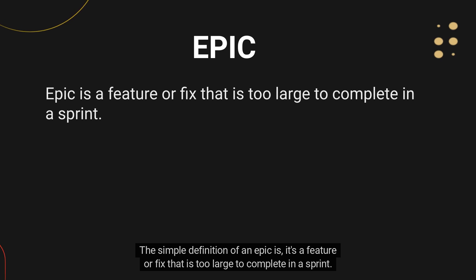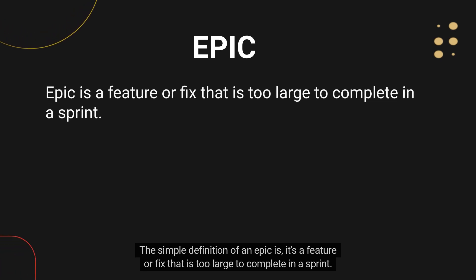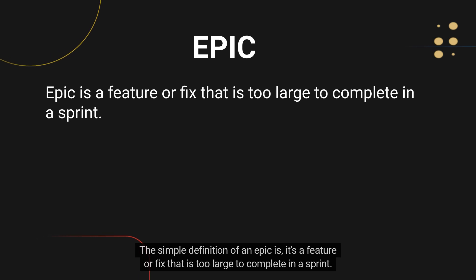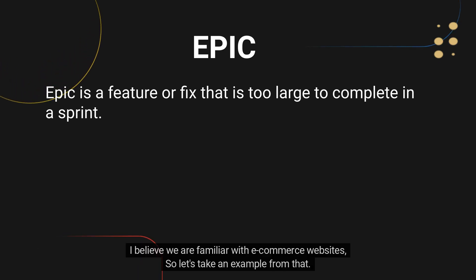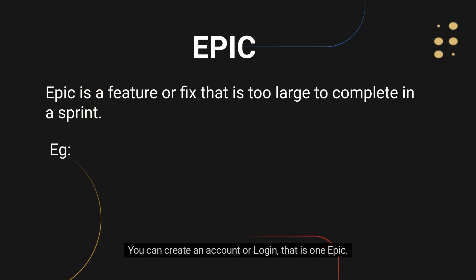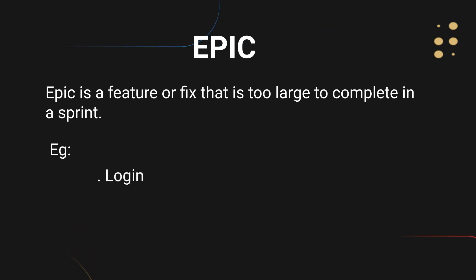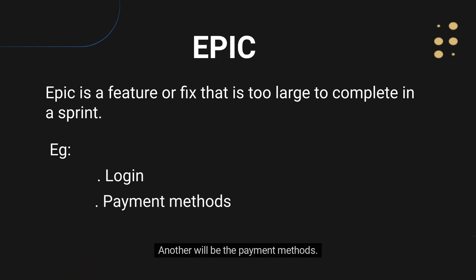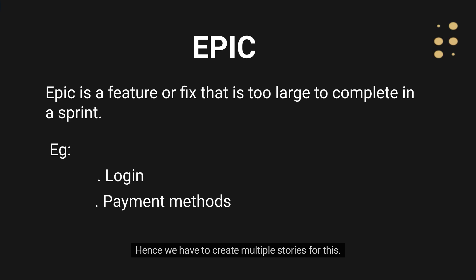The simple definition of an epic is it's a feature or fix that is too large to complete in a sprint. I believe we are familiar with e-commerce websites, so let's take an example from that. You can create an account or log in — that is one epic. Another will be the payment methods. We can't complete this as one story or in one sprint, so we have to create multiple stories for this.